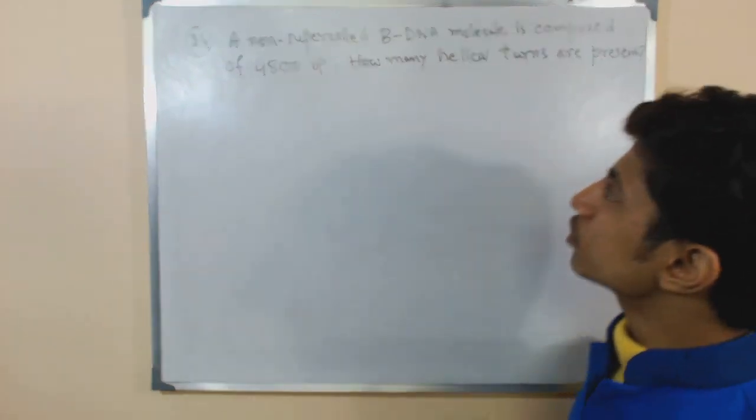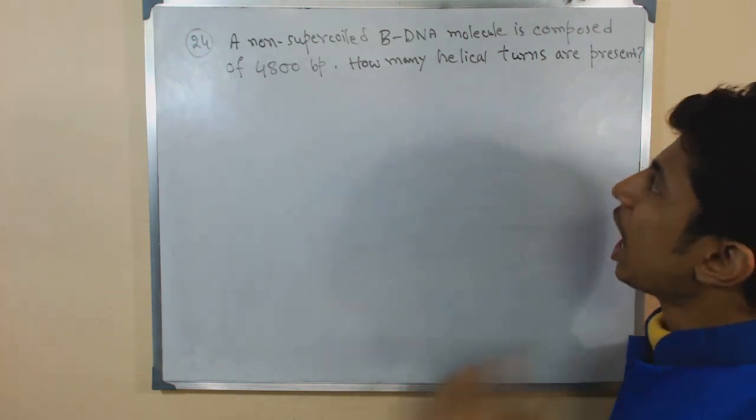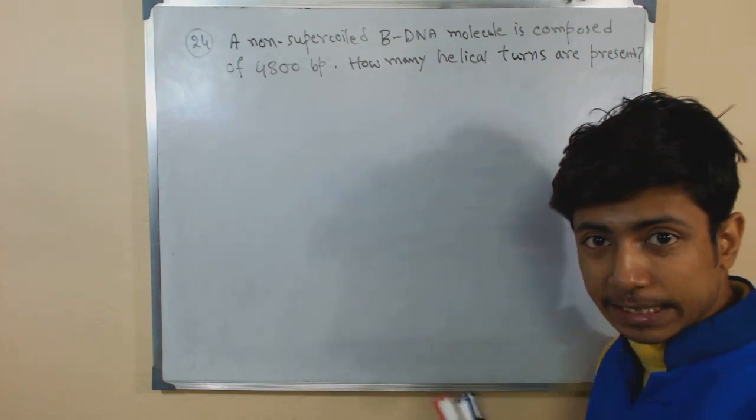This problem is: a non-supercoiled B-DNA molecule is composed of 4800 base pairs. How many helical turns are present in that DNA?